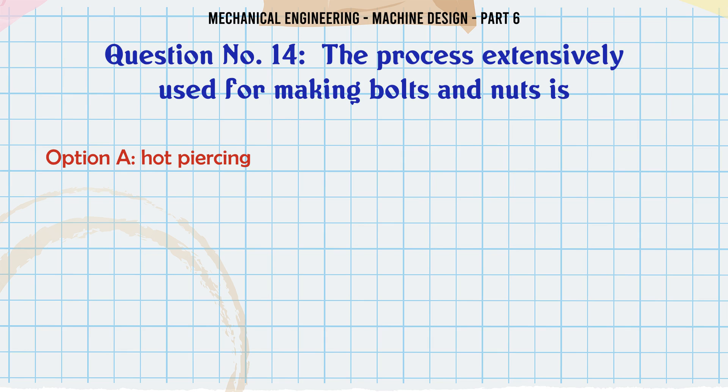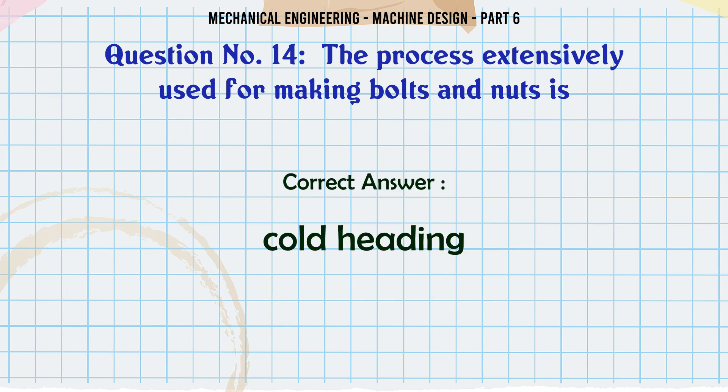The process extensively used for making bolts and nuts is: A) hot piercing, B) extrusion, C) cold peening, D) cold heading. The correct answer is cold heading.